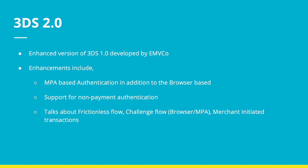3DS 2.0 talks about this frictionless flow, a challenge-based flow, which is basically again challenging the cardholder for some kind of an authentication. And it also provides information about merchant-initiated transactions.